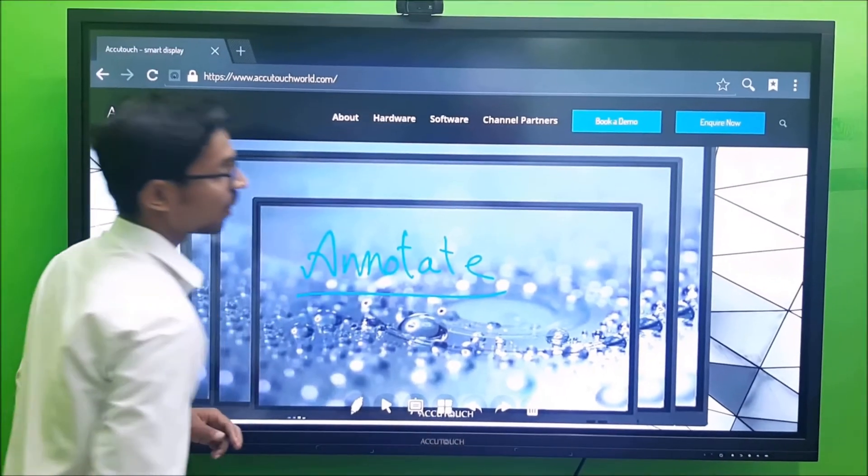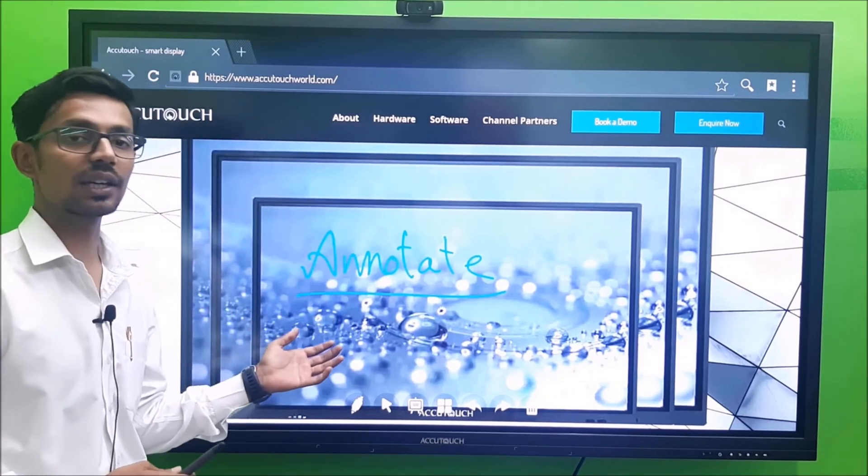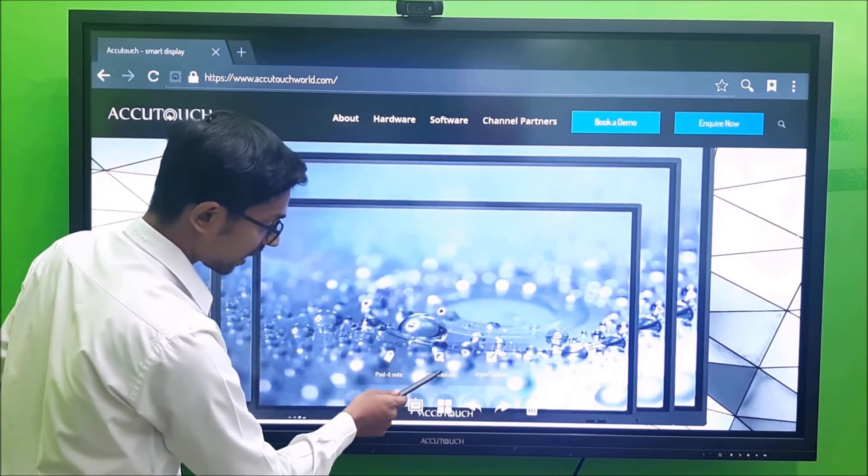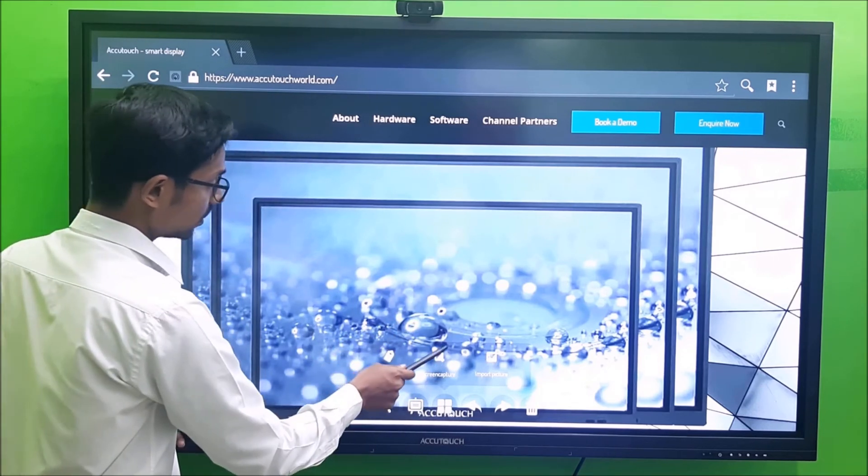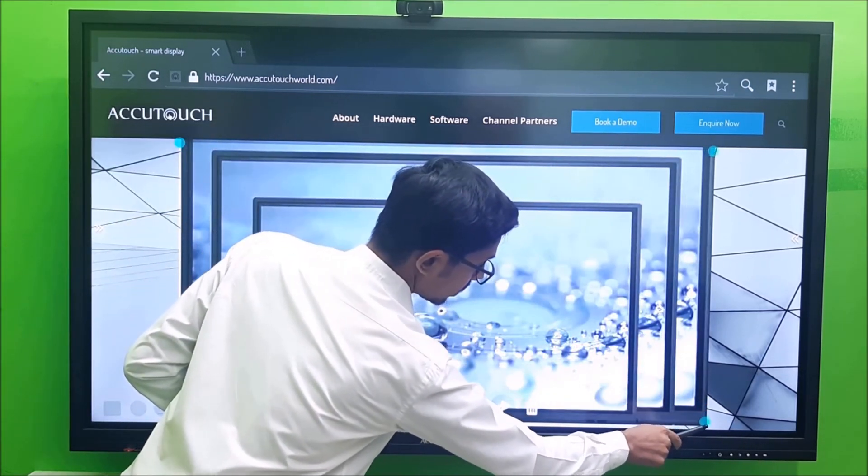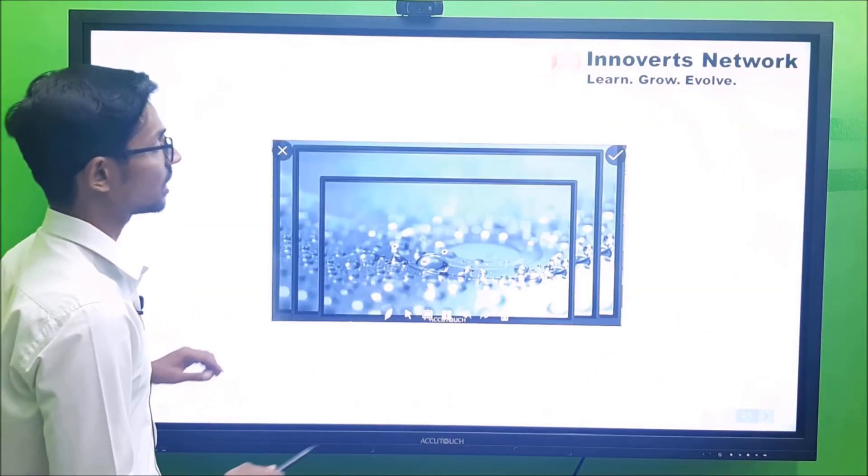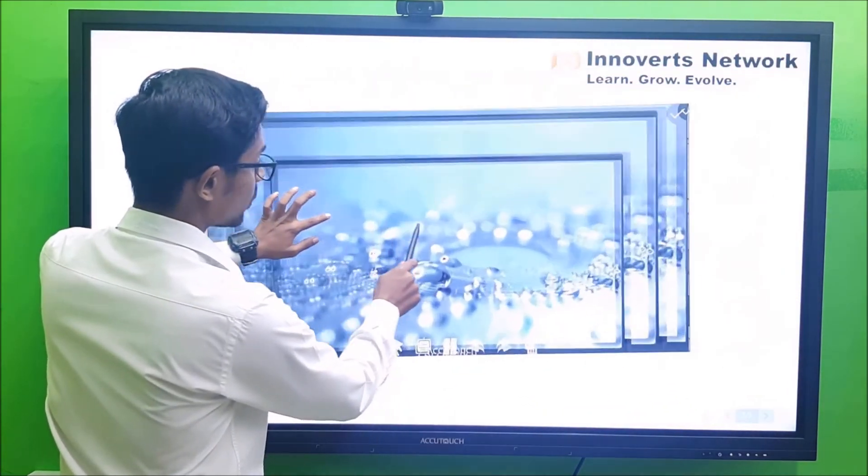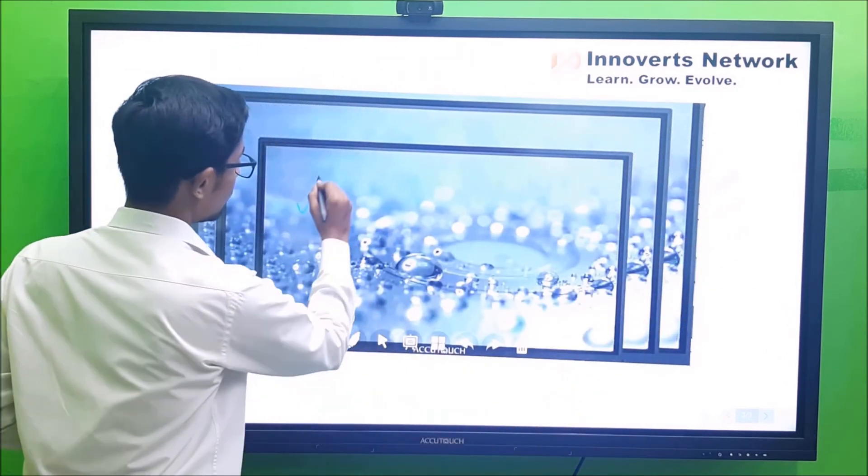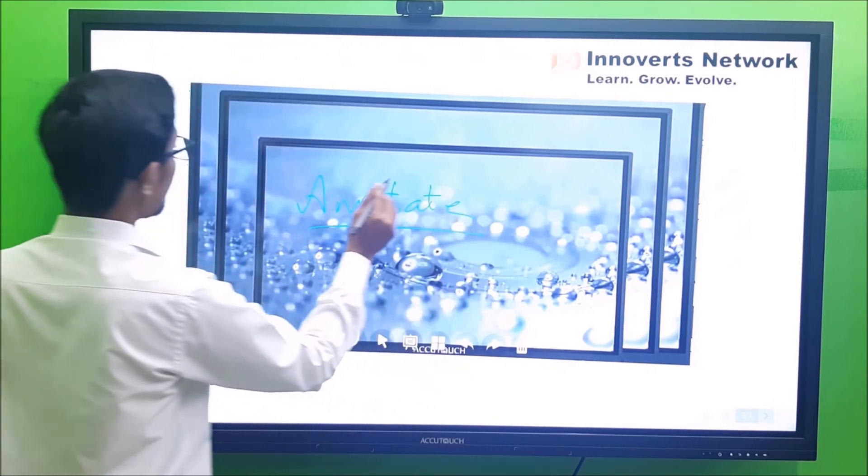Now once I have annotated over here and I would like to explain more about this content on my whiteboarding software, I have an option to bring this content to my whiteboarding software. I can capture the screen. Once I select this, I have a box with which I can capture my screen. I can directly get this content to my whiteboard and with which I can start explaining. I can resize it to any size, I can paste it anywhere, and once I click on this I get to annotate on the image I brought from my screen. This way I get more space to explain my content.